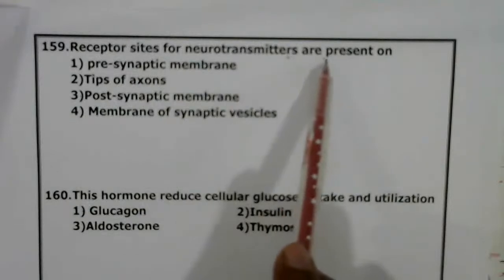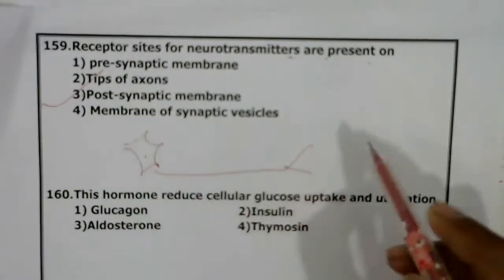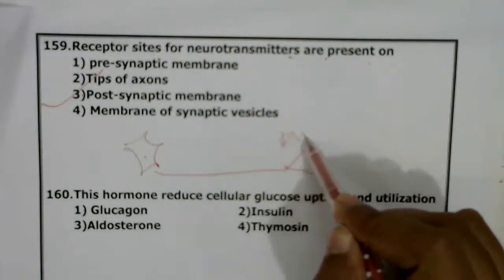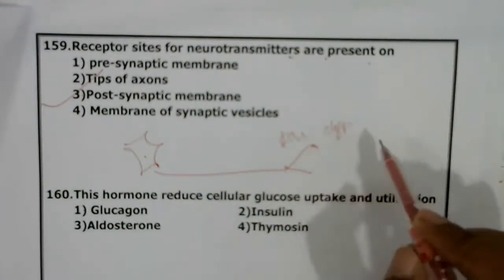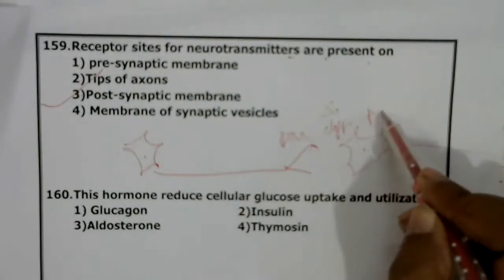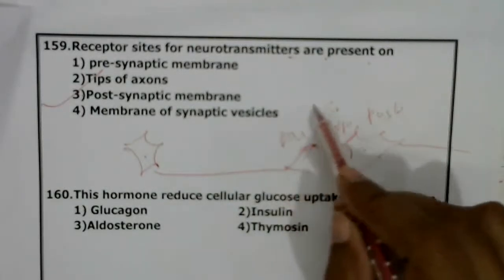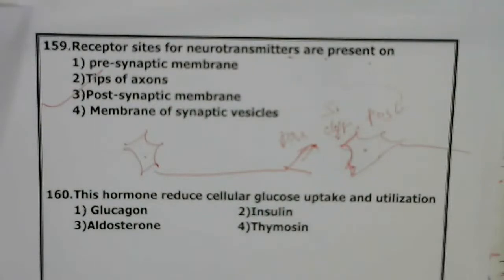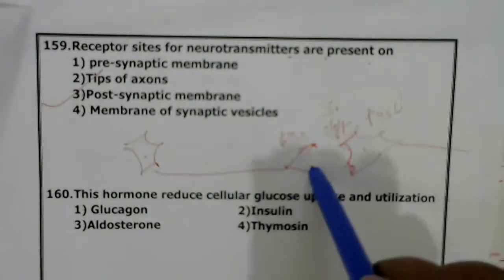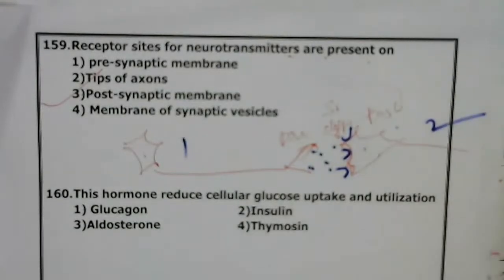Question 158: Receptor sites for neurotransmitters are present in the postsynaptic membrane. Consider one neuron — this side is called presynaptic, then there is a synaptic cleft, and the next neuron's membrane is called the postsynaptic membrane. All three together form the synapse. Neurotransmitters released from the presynaptic membrane go and bind to receptors in the next (postsynaptic) neuron. Correct answer is the third option.